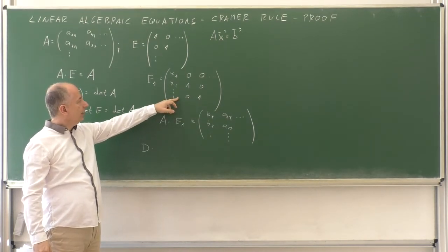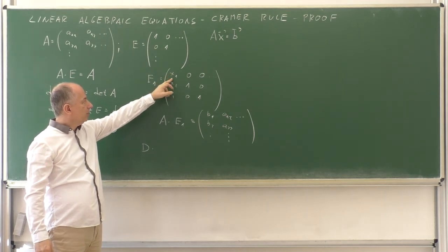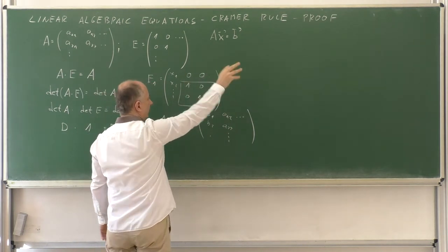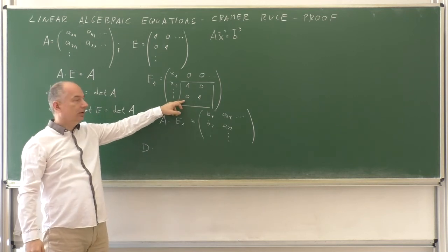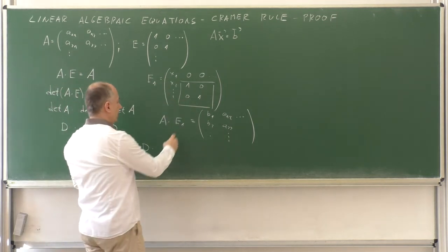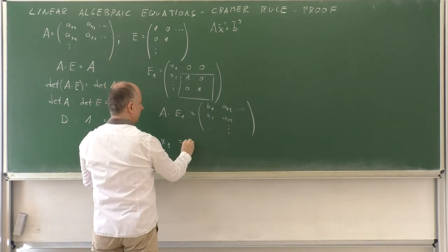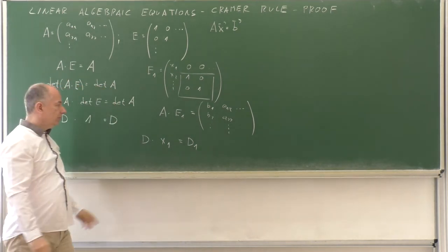If we expand this on the first row, we get X1 times this plus 0 times something and so on. And determinant of this is 1. So, determinant of D1 is X1. And this was denoted as D1 in the algorithm of the Cramer's rule.